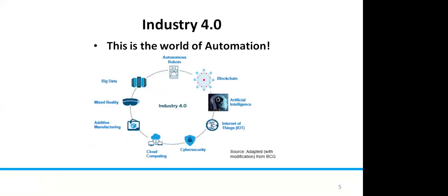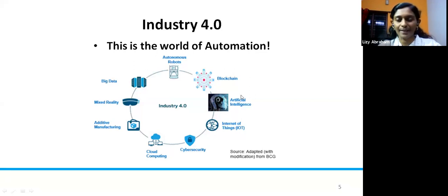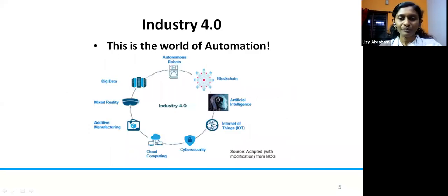Industry 4.0 means the world of automation and actually includes 10 items: artificial intelligence, Internet of Things, cyber security, cloud computing, additive manufacturing, mixed reality, big data, and more. When it comes to Internet of Things, wireless sensor networks are equally important, so we have those 10 items which we can bundle together.